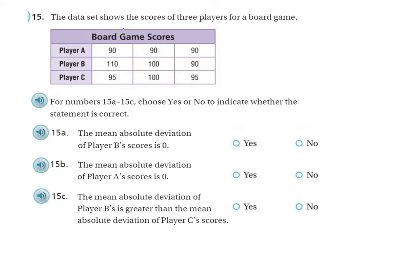The data set shows the scores of three players for a board game: player A, B, and C, and there's their scores. All right, choose yes or no. The mean absolute deviation of player B's score is zero. Player B scored 110. So to find the mean absolute deviation, the first thing I need to do is find the mean.